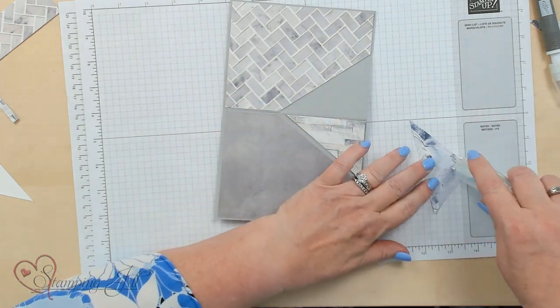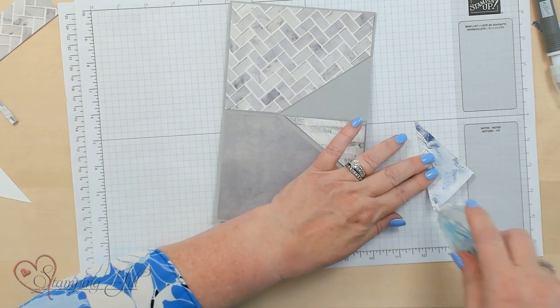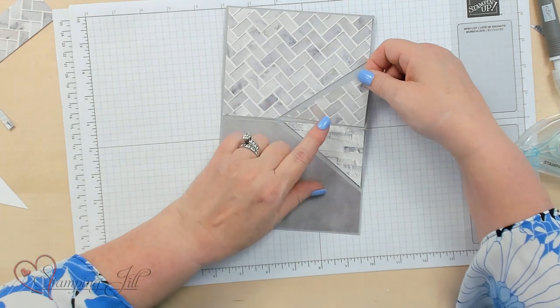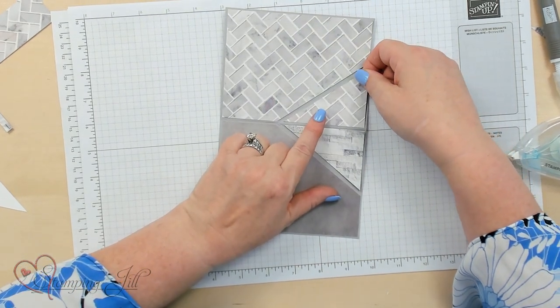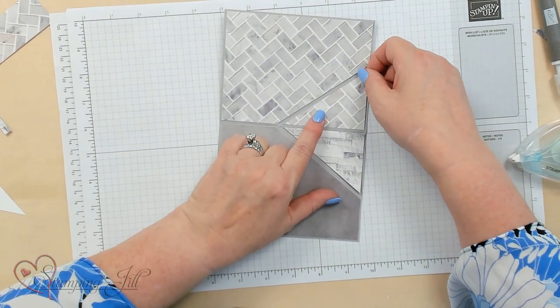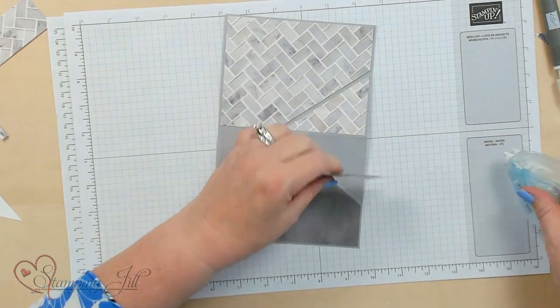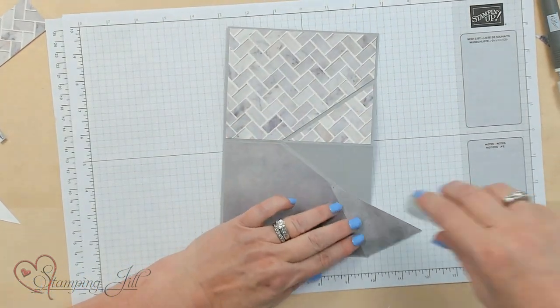Now I have my pieces exactly the size of what I need. I'm going to put those on. This is just the basics of your card. Once you have this down, you can make so many of these cards because it's just a matter of figuring out how to cut the cardstock and the designer series paper.